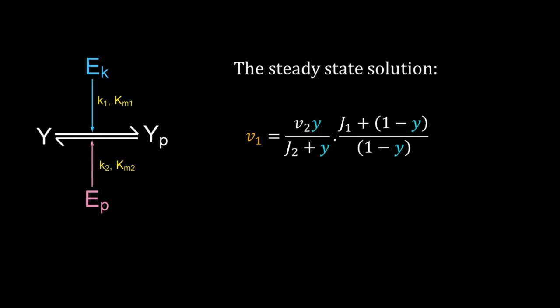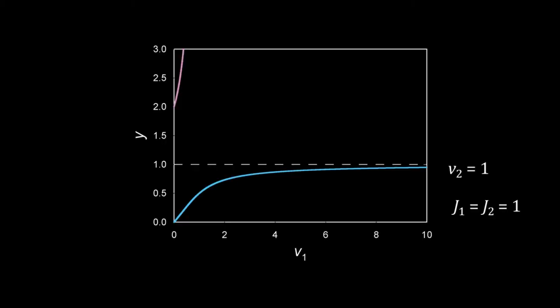Here is the plot when j1 and j2 are equal to one. Small y is a fraction, it cannot be bigger than one, so I will not consider the pink curve. The blue curve behaves like a rectangular hyperbola. Y increases smoothly with v1 and y approaches one as v1 gets very large. So here the switch is working like a rheostat.